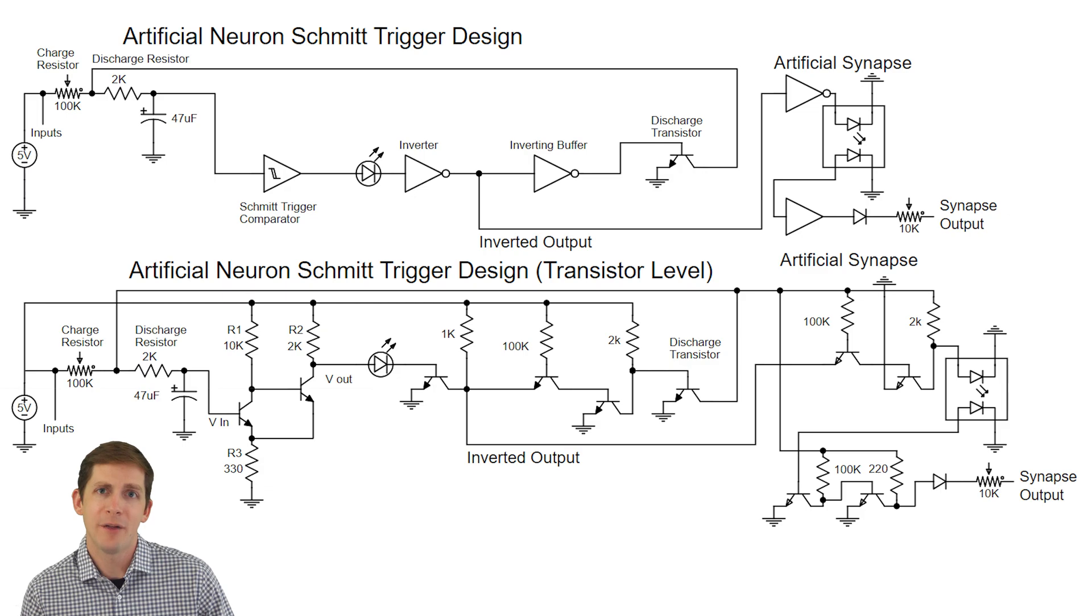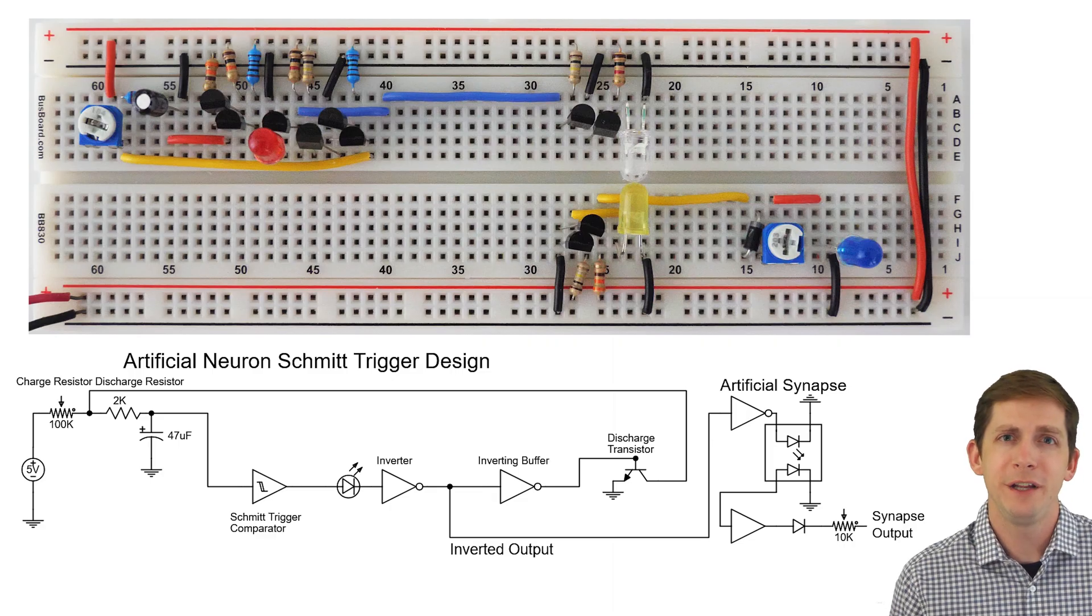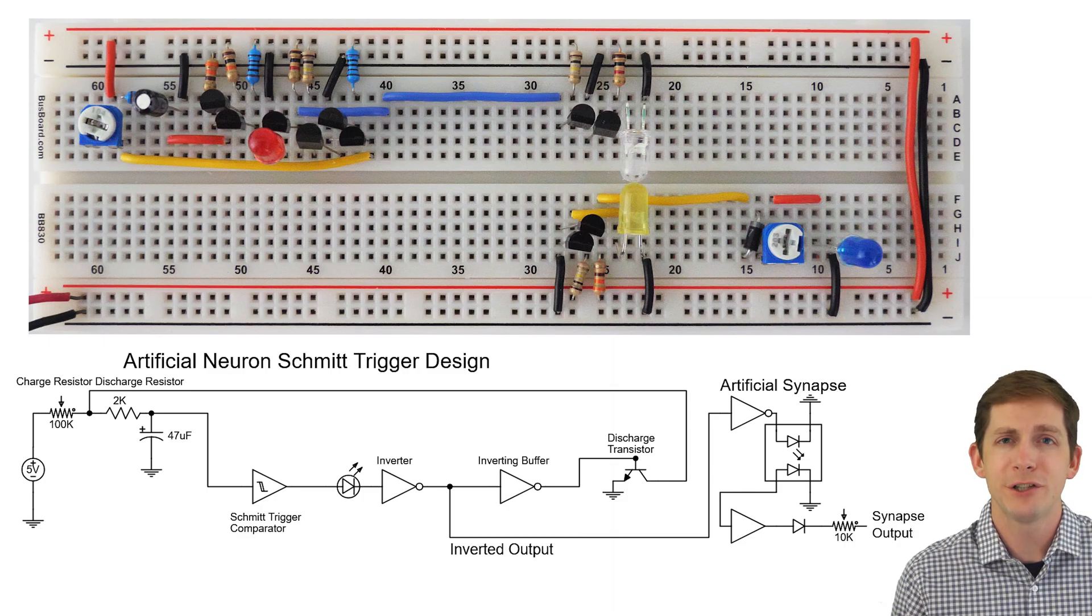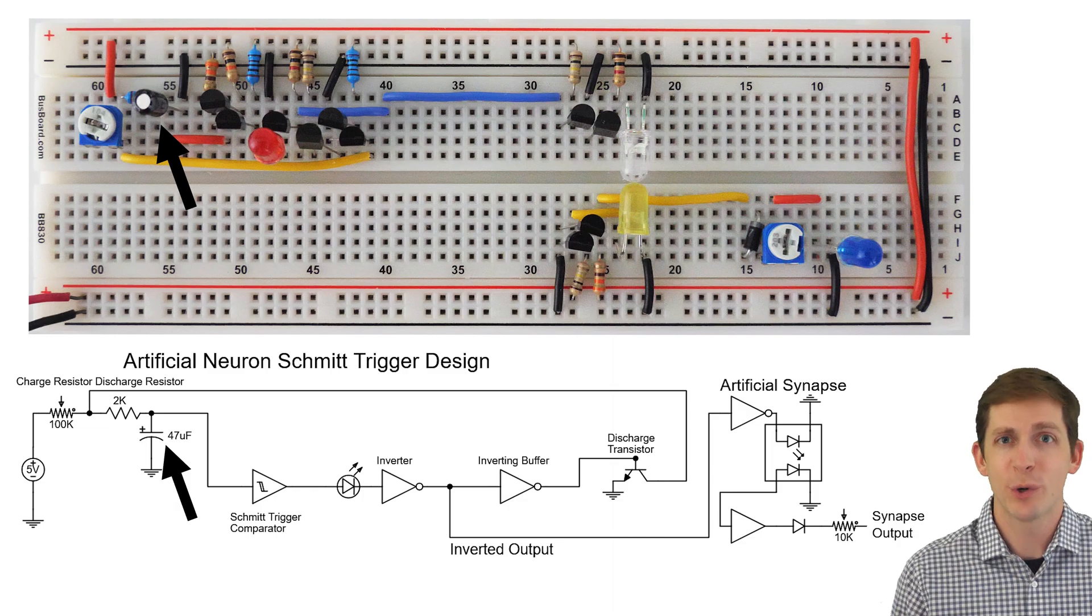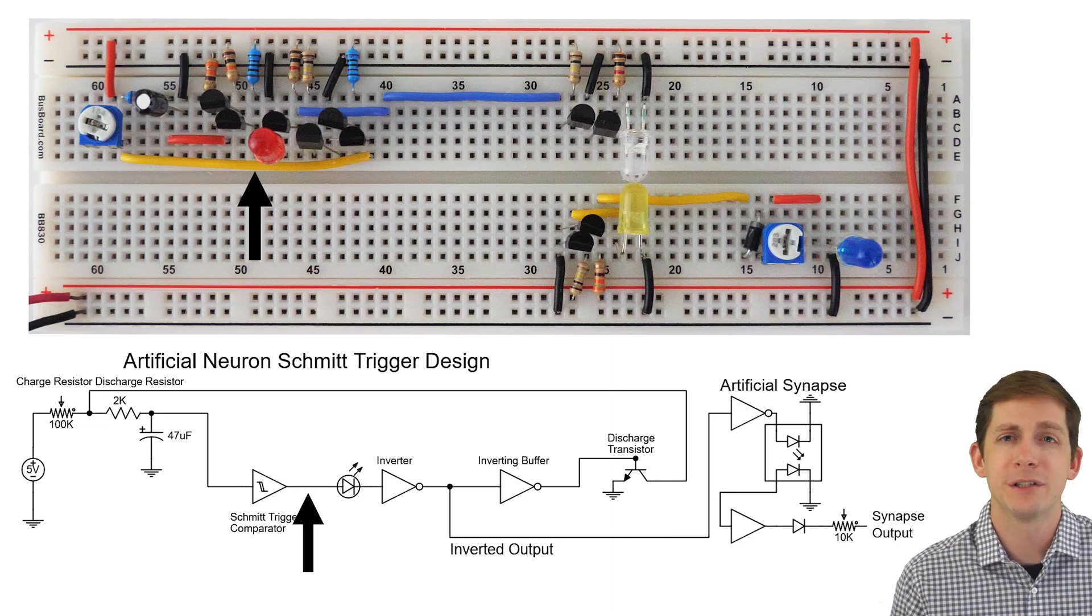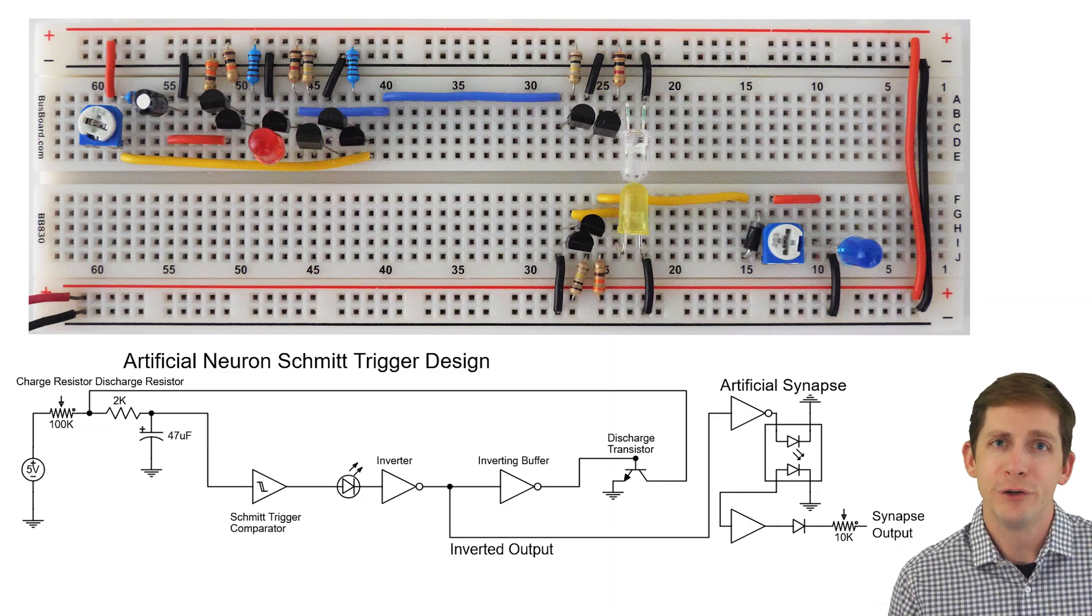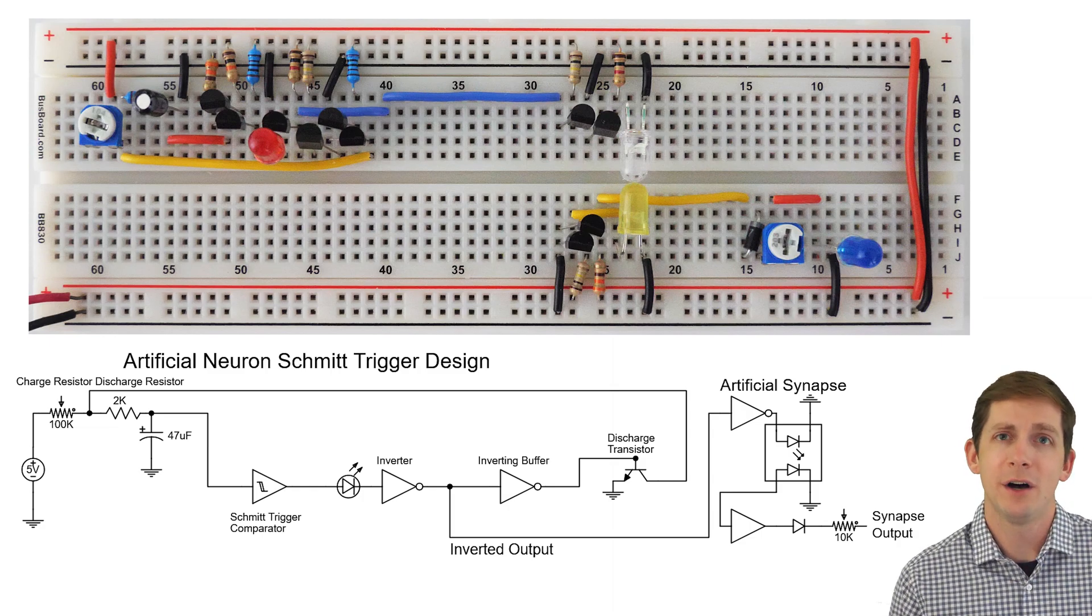Now, let's talk about how the artificial neuron circuit works. The inputs are received here and can be excitatory or inhibitory. The integration of charge happens within the capacitor, and when the capacitor reaches the threshold voltage, the output of the Schmitt trigger turns on, which turns on the LED, which signifies the neuron is firing and helps keep the output low even if there is a small voltage when the output is off. If you do not want the neuron to blink when it is on, you can replace this with a diode.